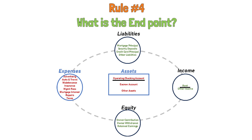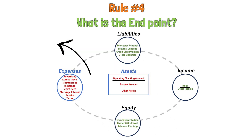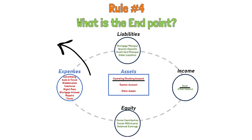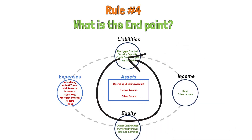Now, if on the other hand — and according to rule number one — you determine that the transaction is of the type that causes value to flow from your business to the outside world, then your ending point will also likely be one of the main categories of income, liabilities, expenses, or equity, as these are also the checkout points for value flowing out of your business. Finally, if the transaction is one that causes value to flow from one part of your business to another, then your starting and ending points can be any of the accounts that you have created in all five main categories of assets, income, liabilities, expenses, and equity.